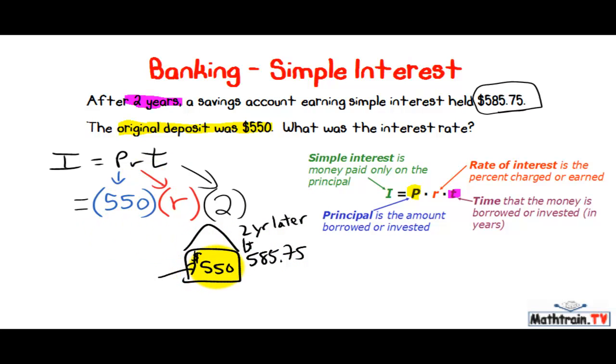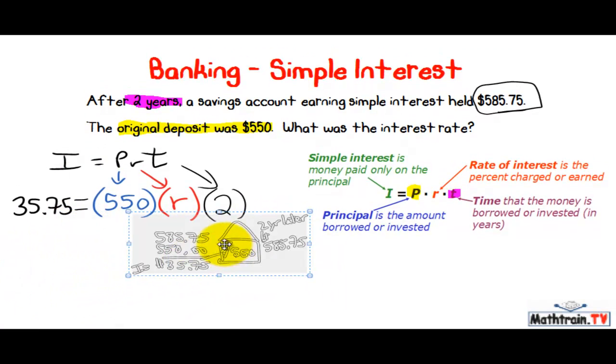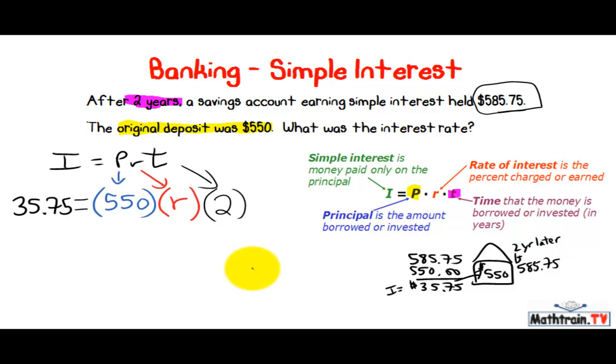It was a difference of $585.75 and $550. So in other words, I started with $550 in the bank. I ended up with $585.75. So I really earned $35.75. That was my interest. So I need to put $35.75 over here for the I. So let's move our little bank picture out of the way.